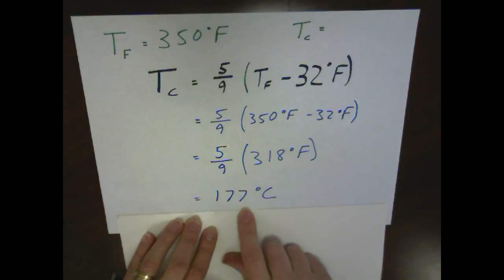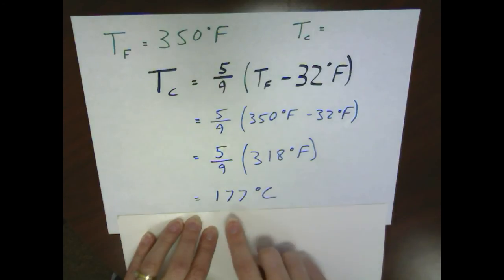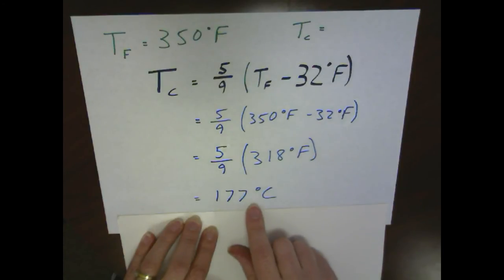You'll also notice if you plug this into your calculator, I've rounded it off. It was actually 176.667. But since we started off with 2 or 3 significant digits, we should make sure that we don't have too many decimal places. If you're doing other calculations, you may want to keep the extra decimal places and then round at the very end.